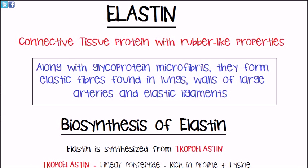In today's video we're going to be discussing elastin, and in the following video we're going to be discussing alpha-1 antitrypsin as a follow-up on elastin. Elastin is a connective tissue protein with rubber-like properties. It combines with glycoprotein microfibrils to form elastic fibers, which can be found in the lungs, the walls of certain large arteries, and in elastic ligaments.